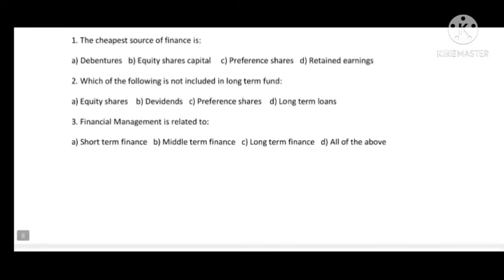Unit 9 — Financial Management. MCQs: The cheapest source of finance is retained earnings, because no interest needs to be paid on it and it belongs to the firm itself. Which is not included in long-term funds — dividends are excluded, so option B is correct. Financial management is related to short-term, middle-term, and long-term finance — all of the above.